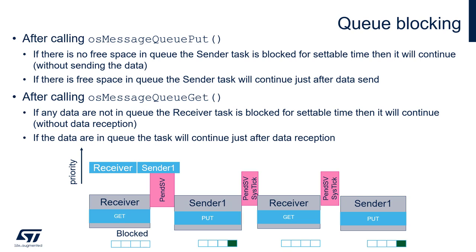In this case, the OSMessageQueuePut function returns OS_ERROR_TIMEOUT, which means the timeout elapsed without successfully sending data to the queue. It is important to monitor the output of this function when using it within a task. In case we specify OS_WAIT_FOREVER as the timeout, the task will be blocked until there is free space in the queue to send new data — so it works really like a semaphore with the possibility to send something afterwards.